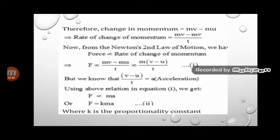Therefore, the change in momentum is equal to final momentum minus initial momentum: MV − MU. Rate of change means the quantity which changes over time. Since momentum changes over time, the rate of change of momentum is (MV − MU) / T.